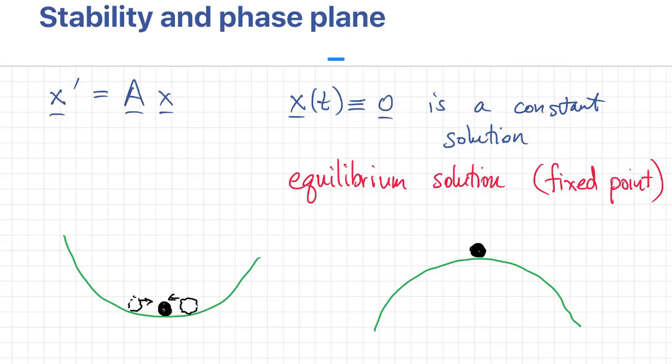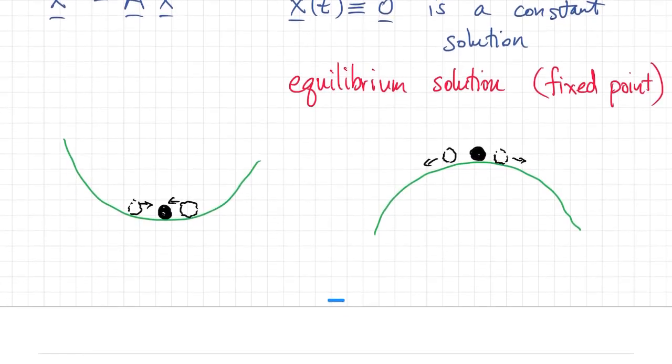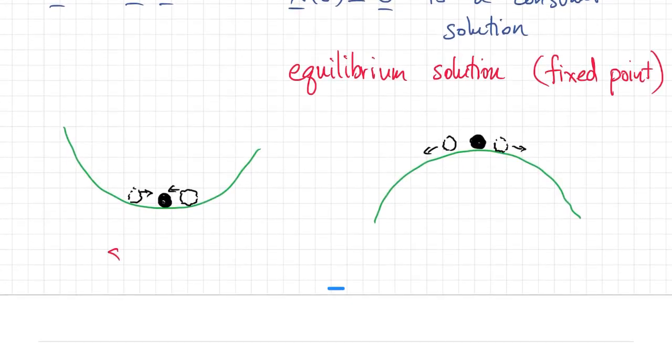When we're on the inside of the bowl, if we perturb the position a little bit to the right or left, it will tend to go back towards the equilibrium spot. Whereas when we're on top of the inverted bowl, if we move away just a little bit, then the solution will get ever farther away from that equilibrium.